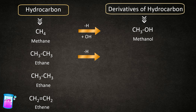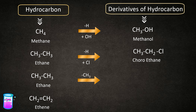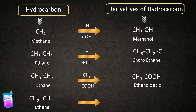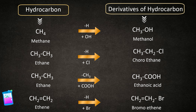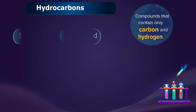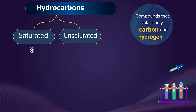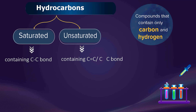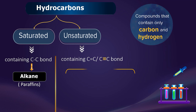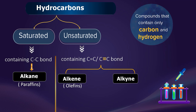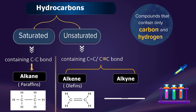Similarly, replacing one hydrogen in ethane with Cl gives chloroethane, so ethane is a hydrocarbon and chloroethane is its derivative. Ethane can also become ethanoic acid or bromoethane by changing functional groups. There are two types of hydrocarbons: saturated and unsaturated. Saturated hydrocarbons contain carbon-carbon single bonds and are called alkanes, also known as paraffins. Unsaturated hydrocarbons contain carbon-carbon double bonds, called alkenes, or carbon-carbon triple bonds, called alkynes.